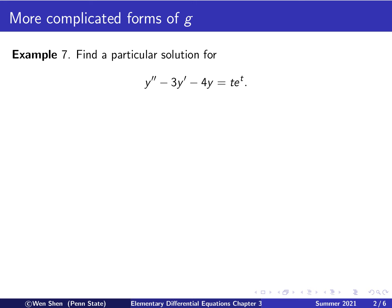Here's the example. We have the equation y'' - 3y' - 4y = t·e^t. Note the form of the source term — it's a new form, which is a product of two functions: an exponential function and a polynomial term t. The goal is to find a particular solution for this equation.